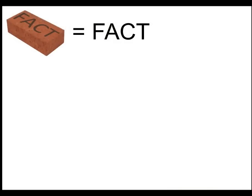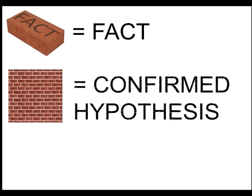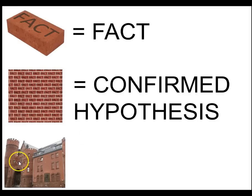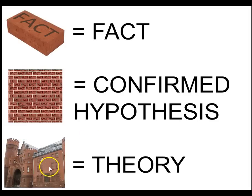A fact is something small and concrete, something you can look at and see — like, we have fossils of dinosaurs, or that about 65 million years ago we don't really see any more dinosaur species. You build those together to get a confirmed hypothesis, like the idea that an asteroid caused the dinosaurs to go extinct. When you look at a large building of confirmed facts, that is a theory.